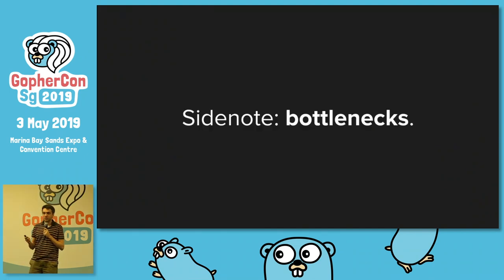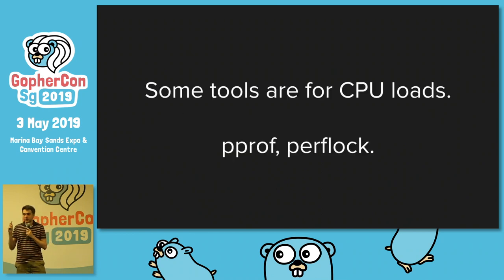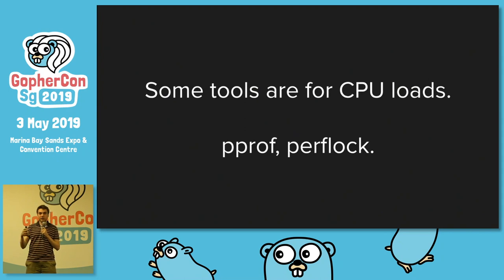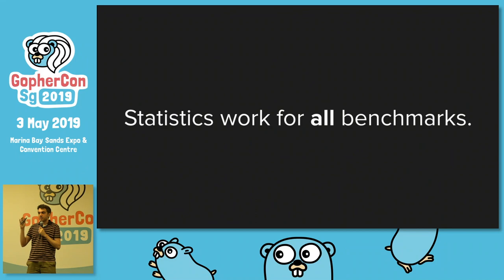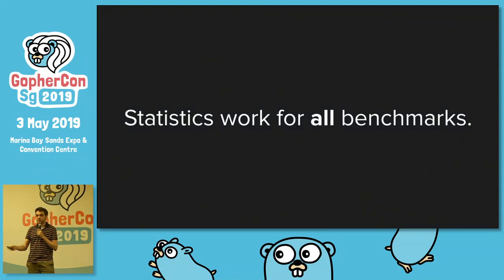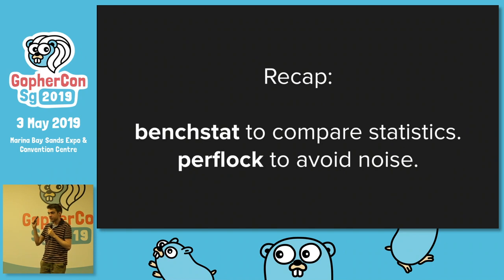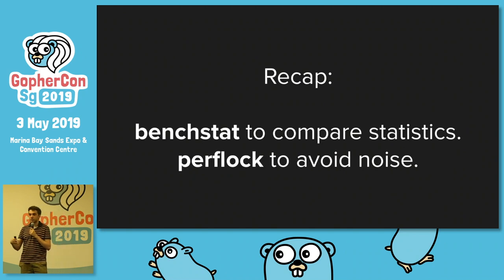A small side note before we go on to bottlenecks: some tools like pprof and Perflock work well with CPU workloads. But statistics — in this case BenchStat — work for all benchmarks, even if your benchmark measures network latency, disk, or anything else. So to recap: use BenchStat to compare statistics and get good data, and Perflock to avoid noise when your laptop heats up too much.